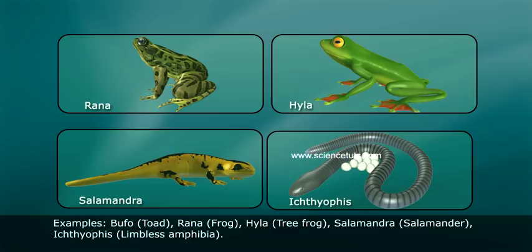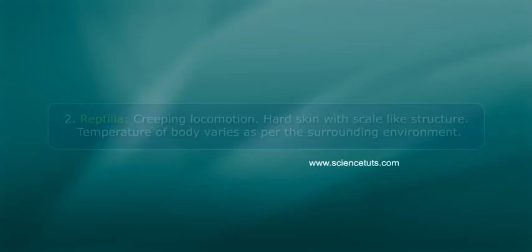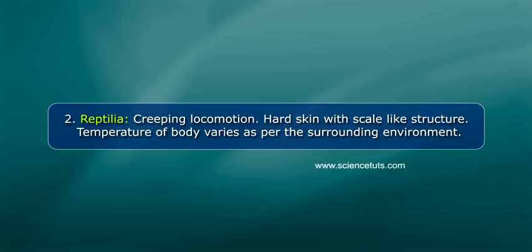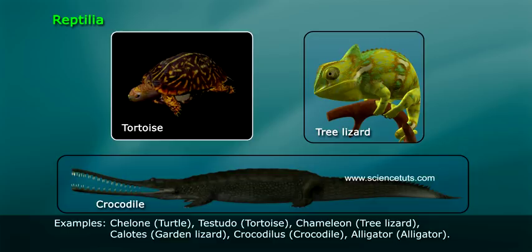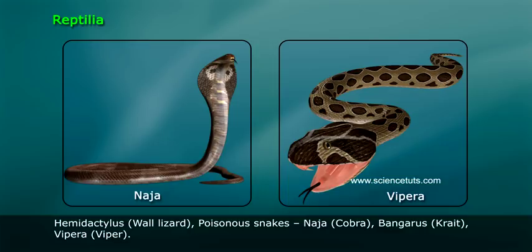Examples of amphibians include: Bufo (toad), Rana (frog), Hyla (tree frog), Salamandra (salamander), and Ichthyophis (limbless amphibia). Reptilia have creeping locomotion and hard skin with scale-like structures. The body temperature varies as per the surrounding environment. Examples include: Chelone (turtle), Testudo (tortoise), Chameleon (tree lizard), Calotes (garden lizard), Crocodilus (crocodile), Alligator (alligator), and Hemidactylus (wall lizard).